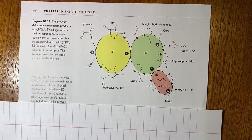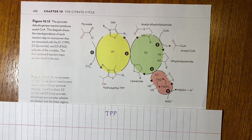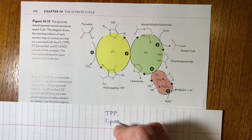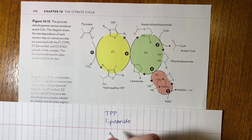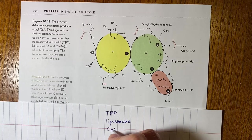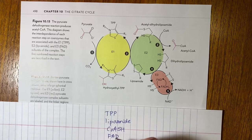There are five different ones and they are TPP which stands for thiamine pyrophosphate, lipoamide, coenzyme A, and then FAD and NAD+.